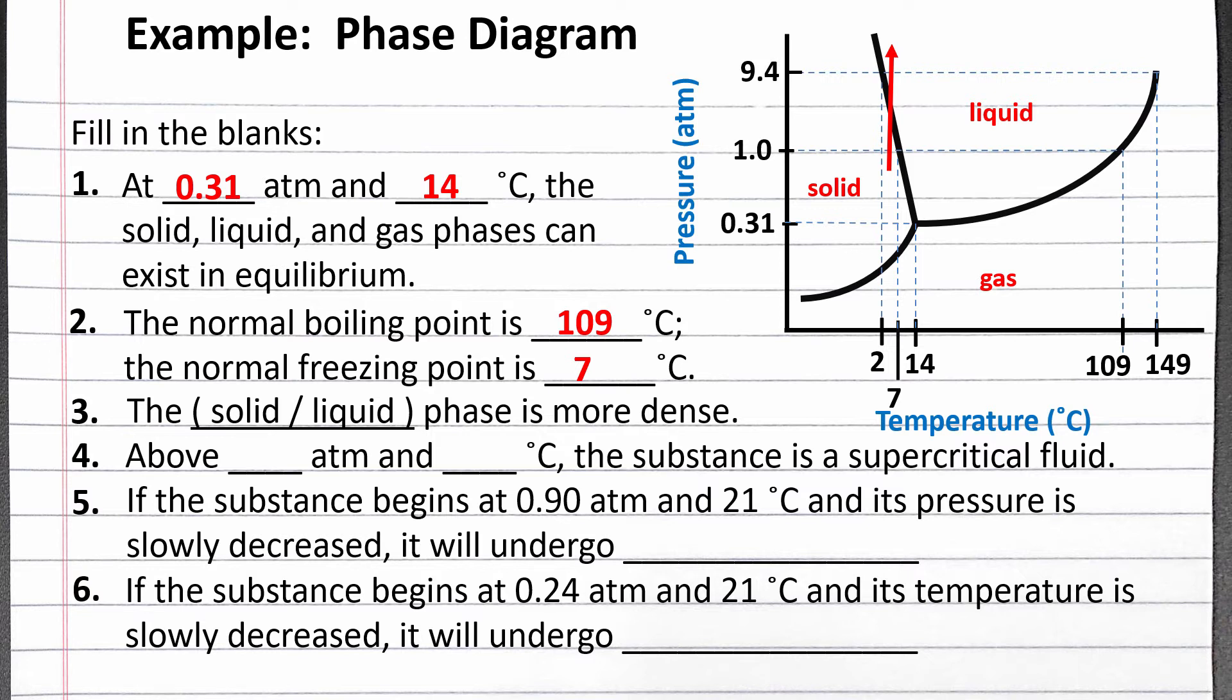In this phase diagram, the liquid phase is more dense, since increasing pressure converts the substance from a solid to a liquid. When the liquid phase is more dense, the fusion curve will have a negative slope, as it does here. If the solid phase is more dense, the fusion curve will have a positive slope.